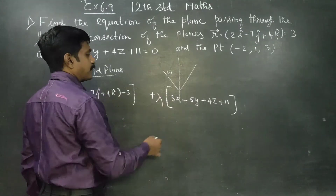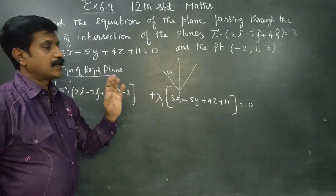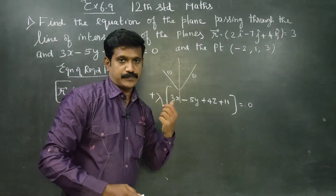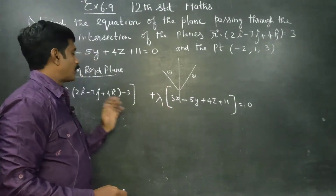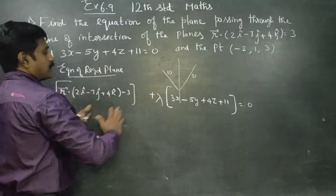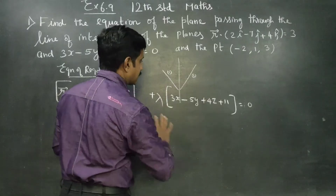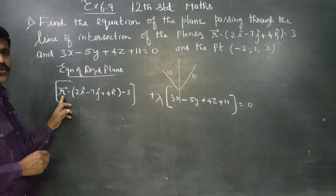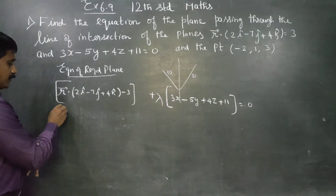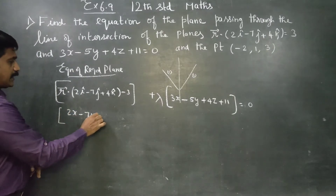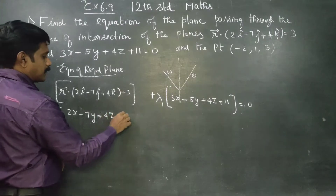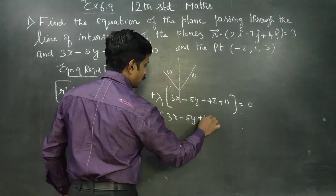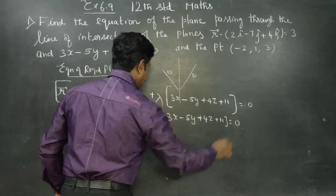This is λ times the second plane equation, and this is the equation of the required plane. The combined equation is: 2x minus 7y plus 4z minus 3 plus lambda into 3x minus 5y plus 4z plus 11 is equal to 0.